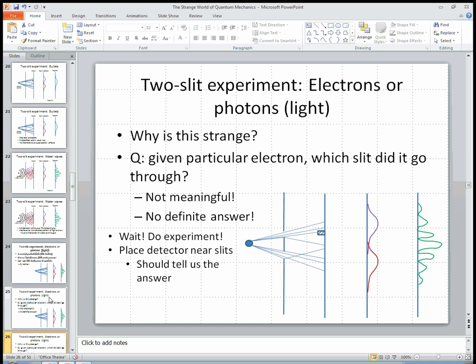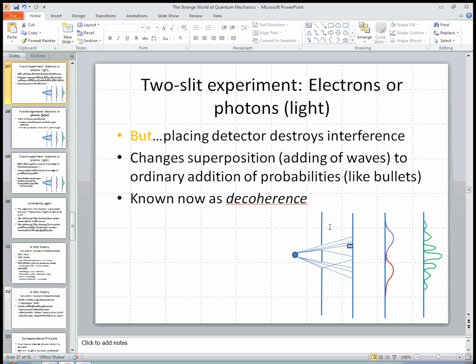If you place a detector near one of the slits, it destroys this interference pattern. This goes away. And it changes this idea of the superposition, which behaves like adding waves, to the ordinary addition of probabilities, which is how bullets behave. There's a fancy name for this nowadays that people study this more especially. And it's called decoherence. The idea of the coherent weirdness of quantum mechanics fizzling out and becoming like ordinary probability. It has a name. It's called decoherence.